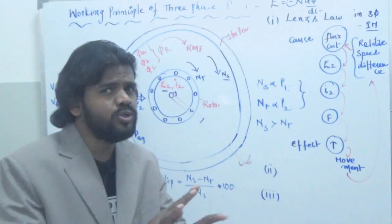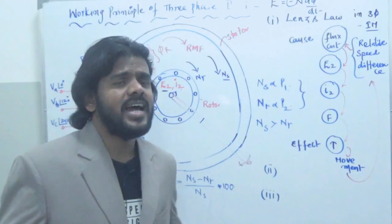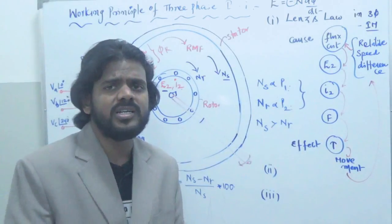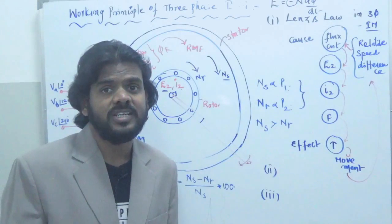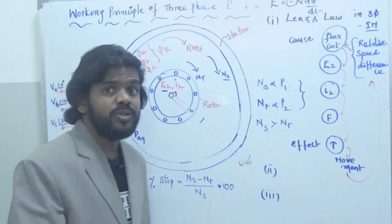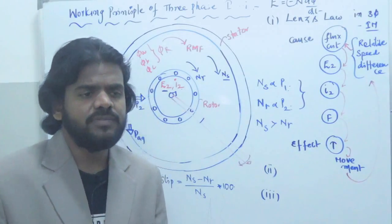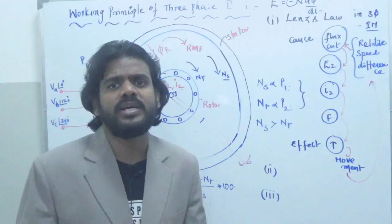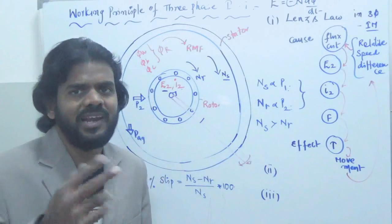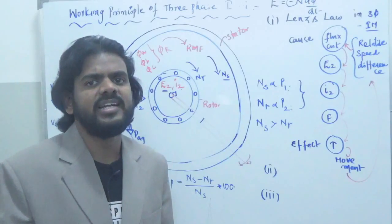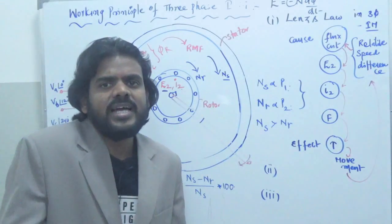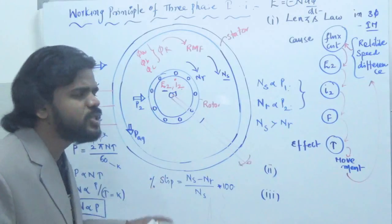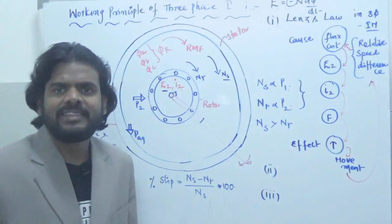The reason we have slip is that the rotor always slips behind the stator. In a synchronous motor, the rotor always runs at synchronous speed, so there is only one speed and no slip. In DC motors — series, shunt, or any type — there is also only one speed. The induction motor is the only motor with two speeds, Ns and Nr, making slip a unique and important concept here.